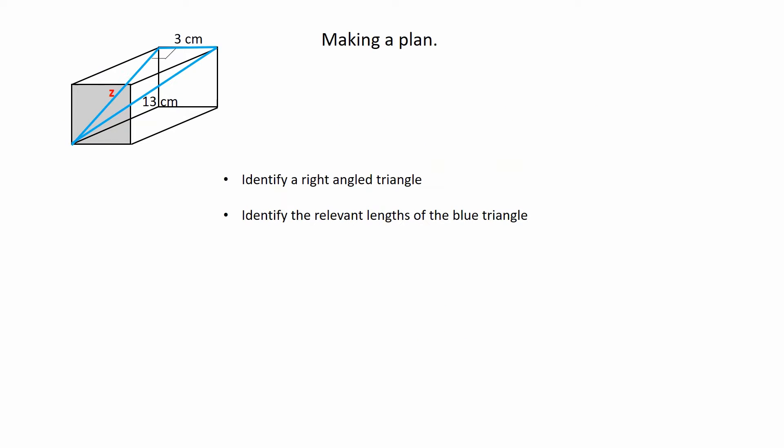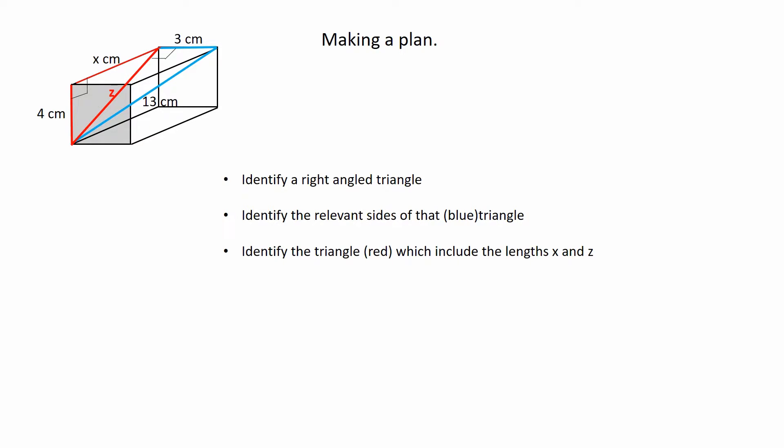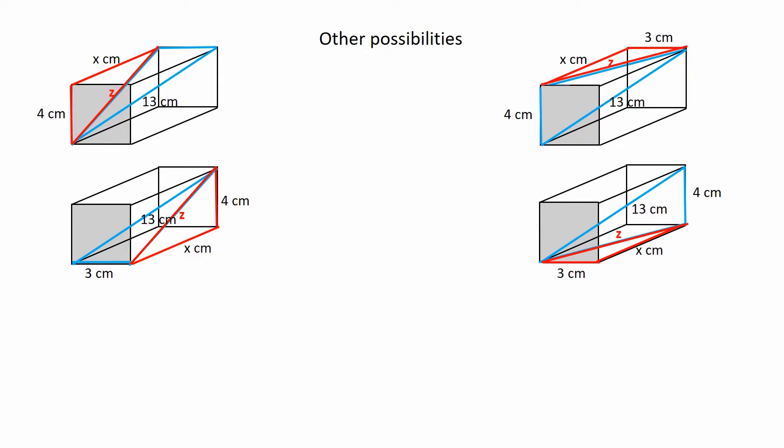To solve, identify the right-angled triangles needed. First, the blue triangle, then the red triangle, and check that the length x of the cuboid can be found. There are other possible triangles that could have been chosen.